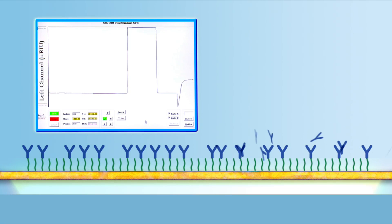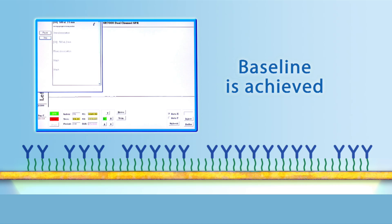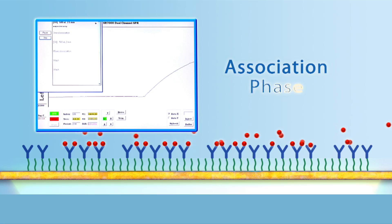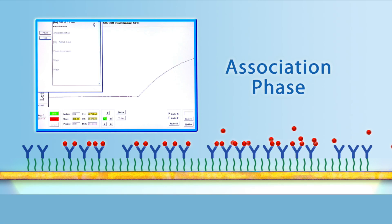After immobilization, a baseline is achieved and the analyte is injected over the sensor surface. As the analyte binds to the immobilized ligand, a signature increase in signal response is observed. This is the association phase.